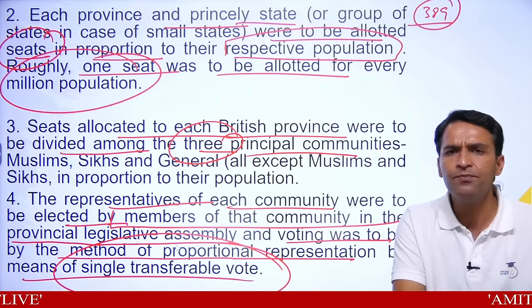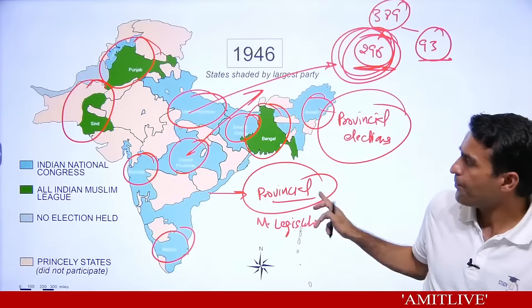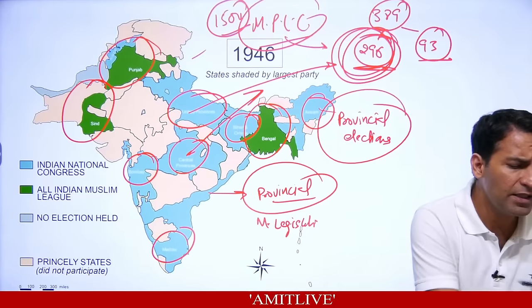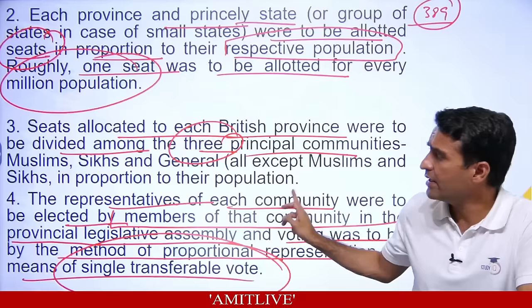The basic idea: the Member of Provincial Legislative Assembly — about 1500 MPLAs — these people voted to choose the 296 Constituent Assembly members. The representative of the princely states were to be nominated by the heads of the princely states.